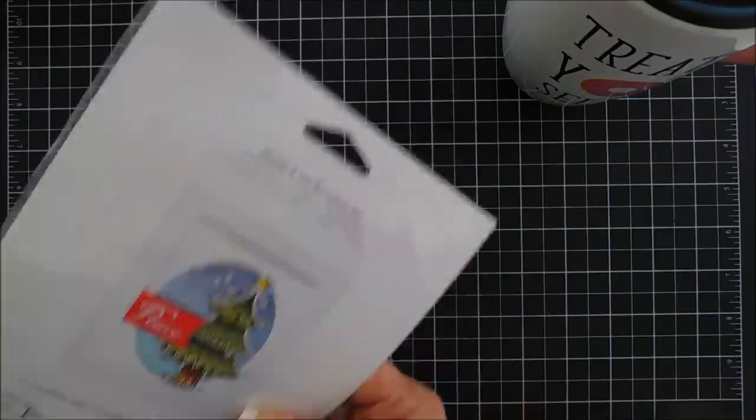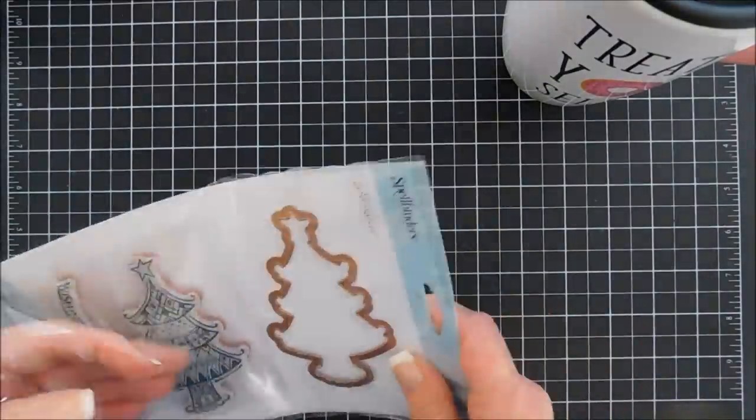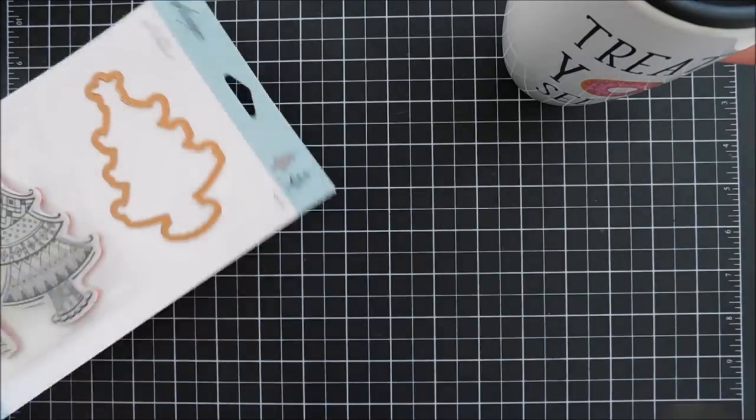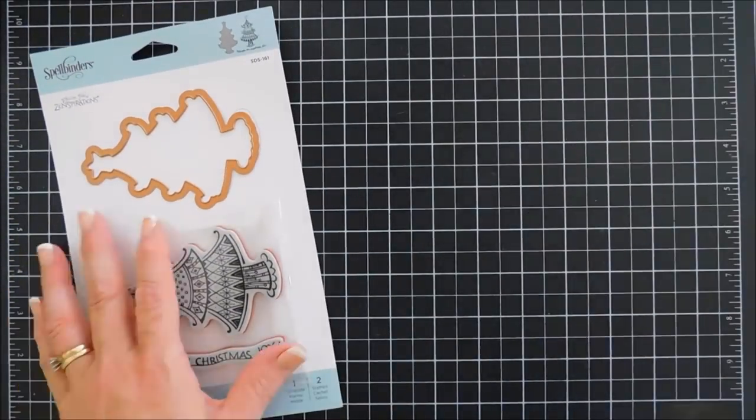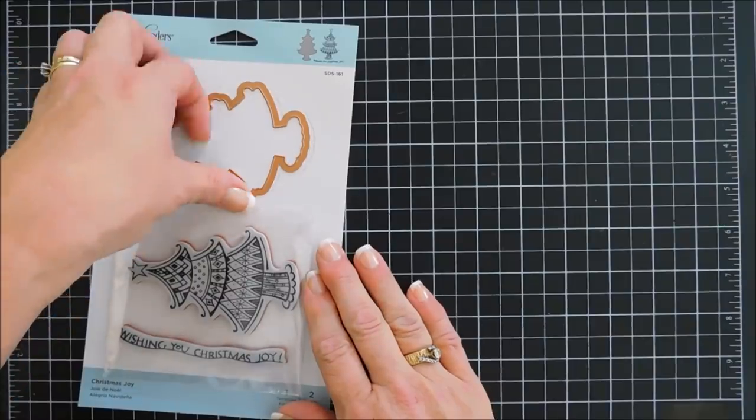Super cute little set. It has a fun, kind of a wonky Christmas tree, and it also has a coordinating die. The sentiment in here says, Wishing You Christmas Joy. So we're going to jump in, and I'm going to stamp this.